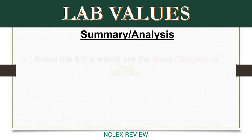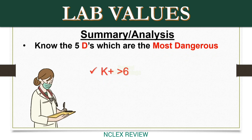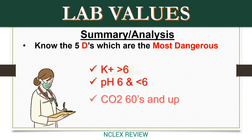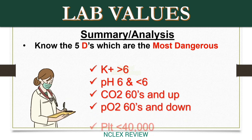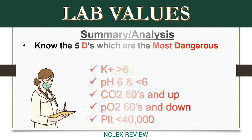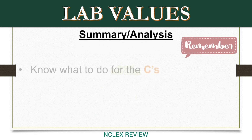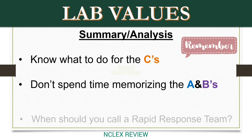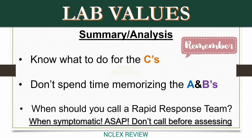Summary and analysis: know the 5 Ds — the most dangerous values. 1. Is potassium greater than 6? 2. Is pH 6 and less? 3. Is CO2 in the 60s and up? 4. Is PO2 in the 60s and down? 5. Is platelet less than 40,000? Always remember: know what to do for the Cs. Don't spend time memorizing the As and Bs. Call rapid response team when symptomatic — ASAP. Don't call before assessing.